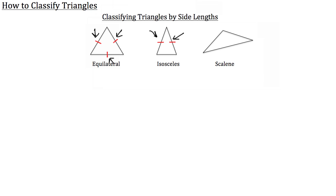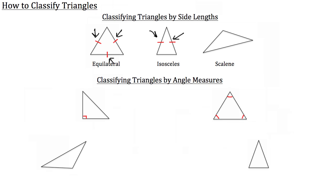Those are the three ways that you can classify a triangle by its side lengths. Now the other way to classify triangles is by their angle measures. Here we've shown four different triangles and we're going to classify each one of them by their angle measures.